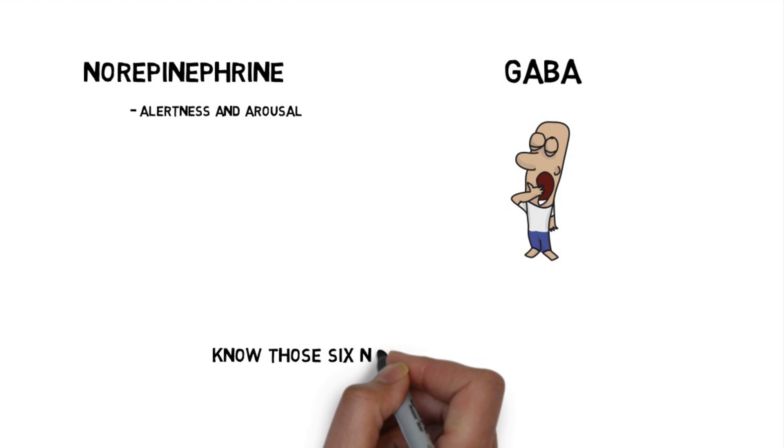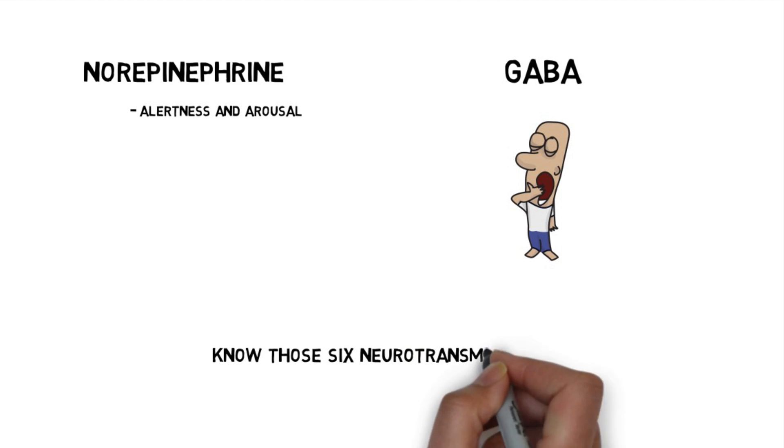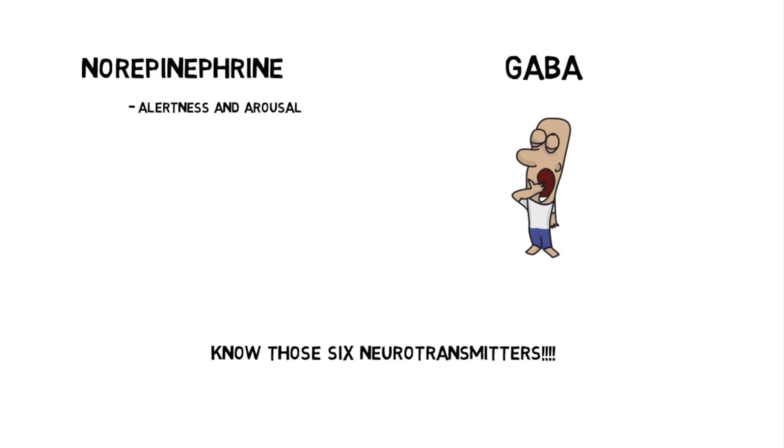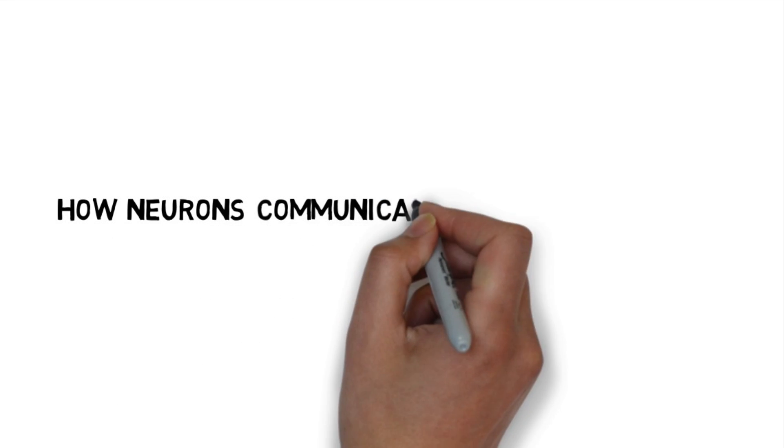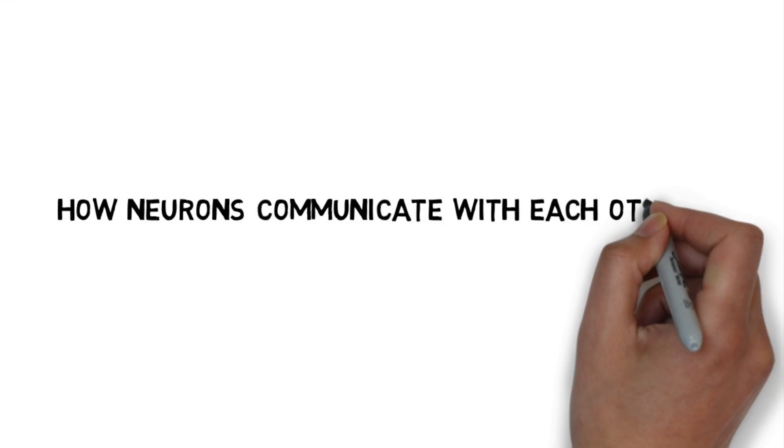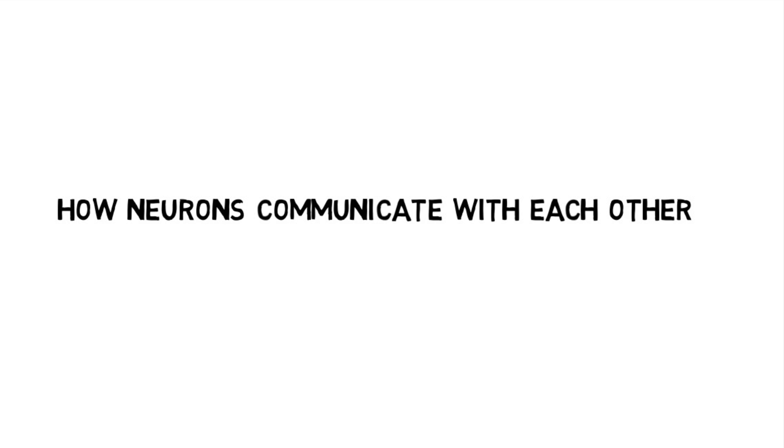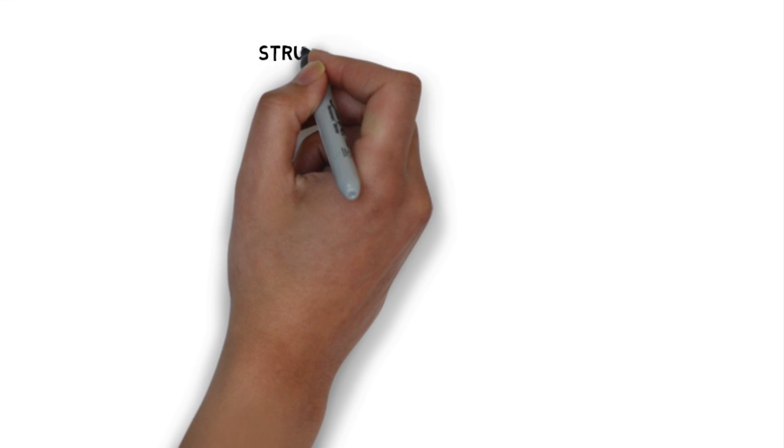So now you have kind of a conception of what a neurotransmitter is and what they can do. We still have to address how neurotransmitters actually get around our brain. In other words, how those neurons actually toss or throw or fire the neurotransmitters from one neuron to the next. And the best way to do that is to go over some neural anatomy or the structure of a neuron.